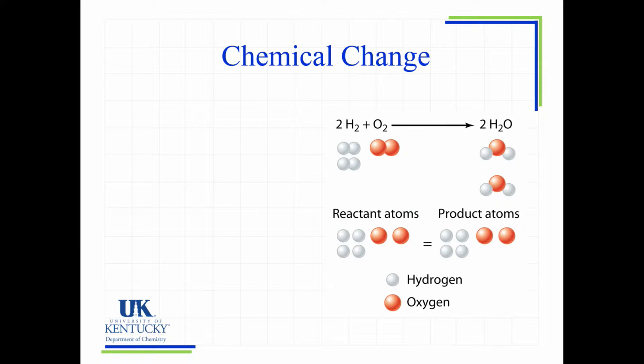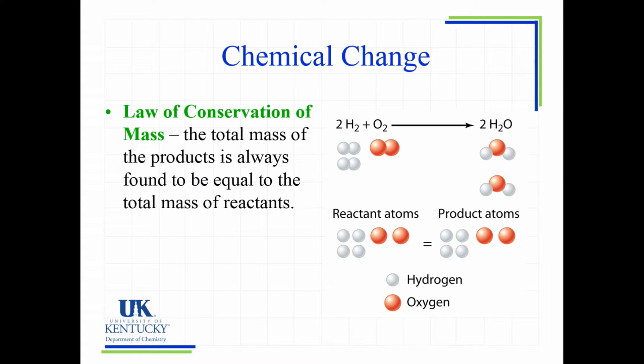Now, in a chemical change, what I drew up on the screen here was not what we call balanced. It doesn't work very well. But what we're going to see here is that we have got to have the same number of atoms on both sides. This is called the law of conservation of mass.